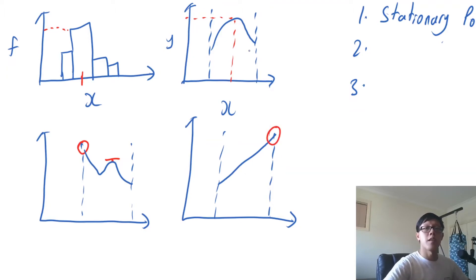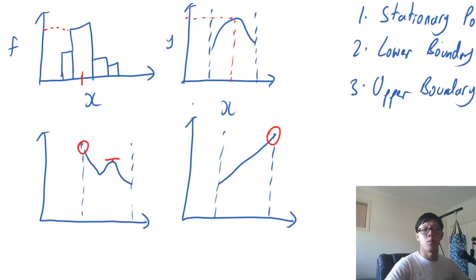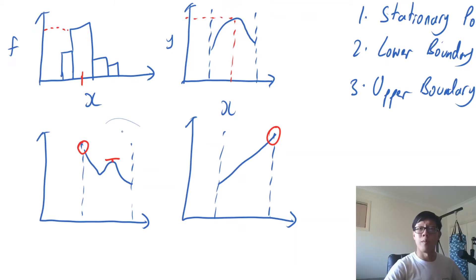So the two other things we need to check are the lower boundary of our domain and the upper boundary of our domain, as we can see here. Those are the three possibilities of where our global maximum — our mode — can lie.